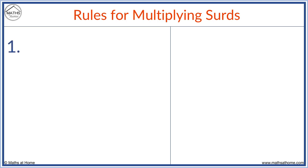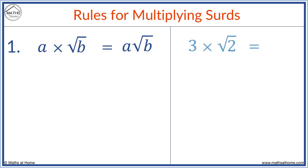The first rule is that a times root b equals a root b. We just don't write the multiplication sign. For example, 3 times root 2 equals 3 root 2 — we just remove the multiplication sign.